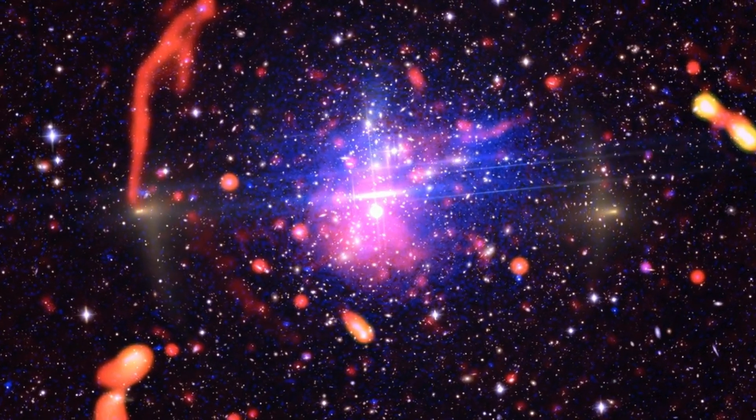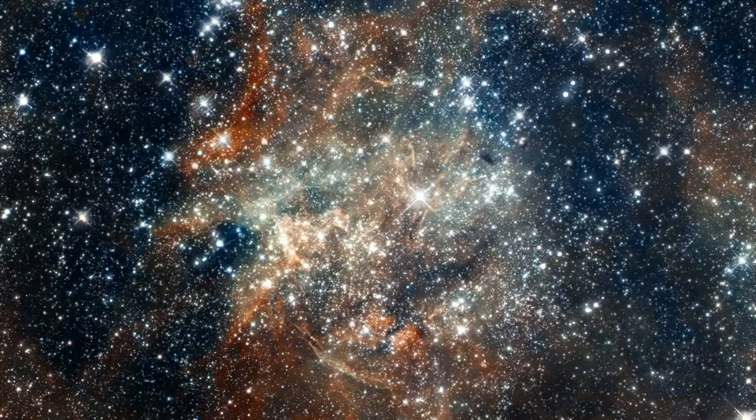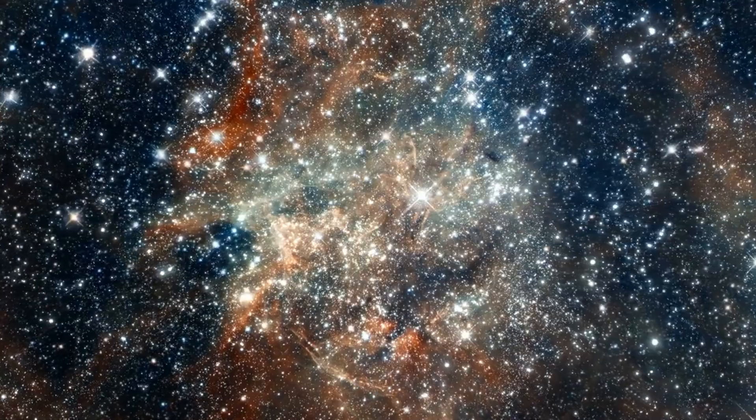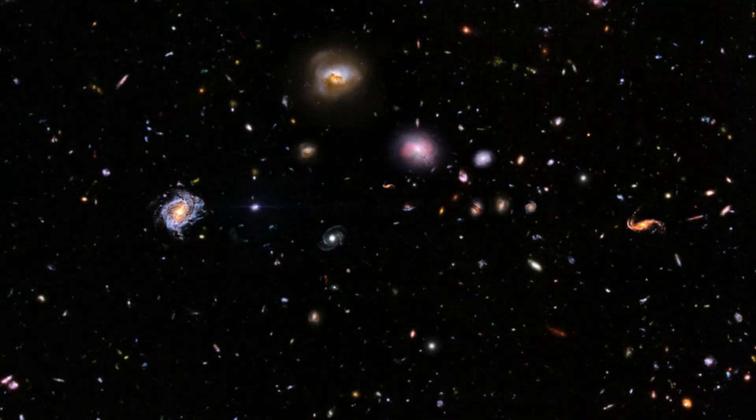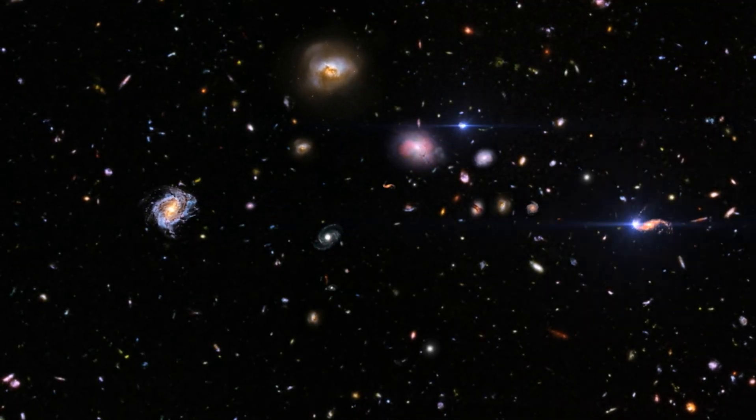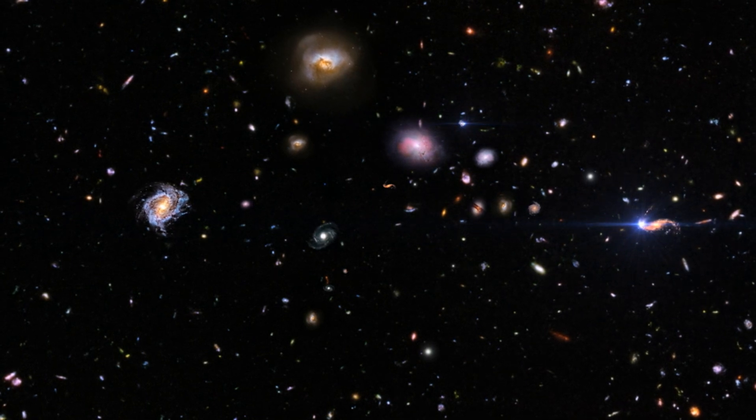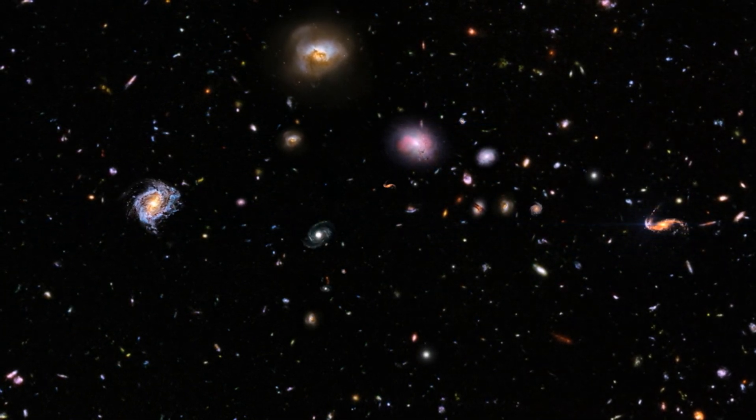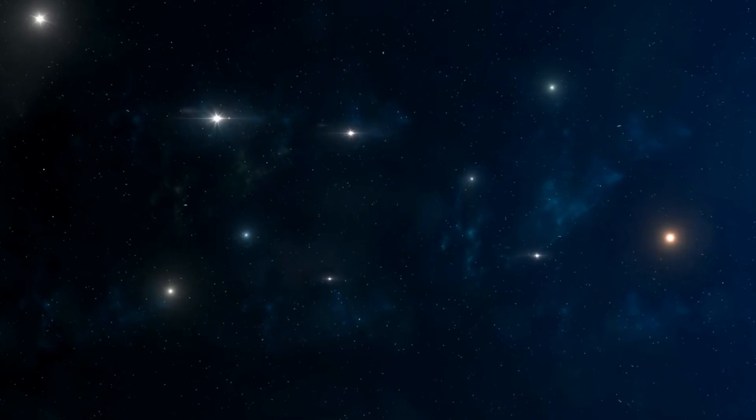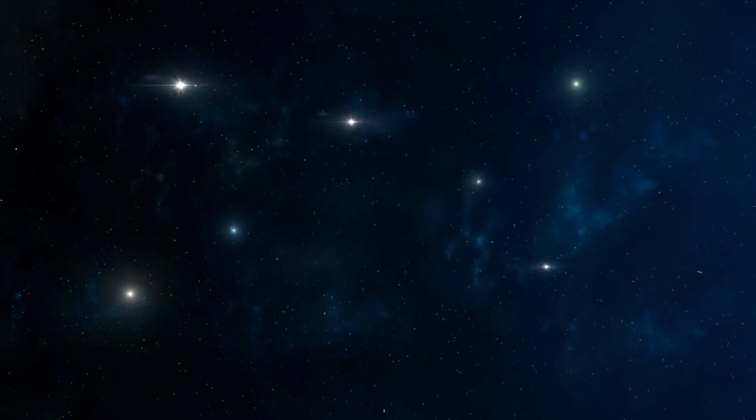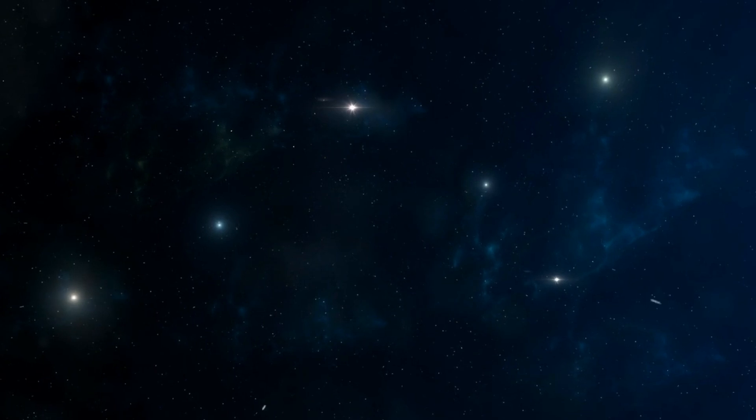During this phase of contraction, small differences in the density of space could have created tiny black holes. These early black holes, known as primordial black holes, may have survived the bounce and continued to exist as the universe expanded. Some scientists now think that these ancient black holes could be what we call dark matter.